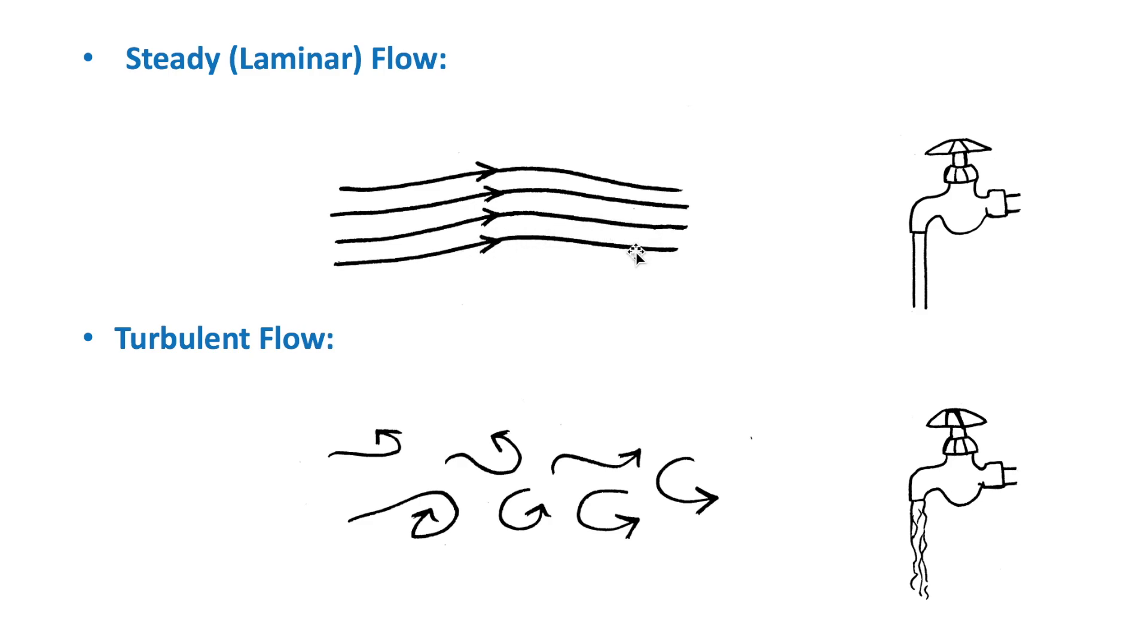Above a critical value of flow speed, the flow becomes turbulent. This flow is irregular and chaotic, and has whirlpool-like regions. One example is the flow of water in a river in regions around rocks.